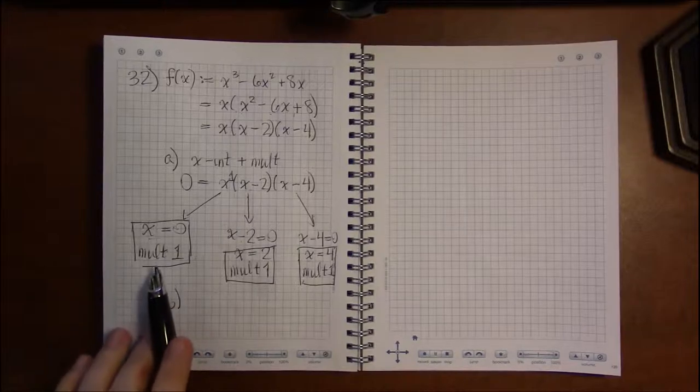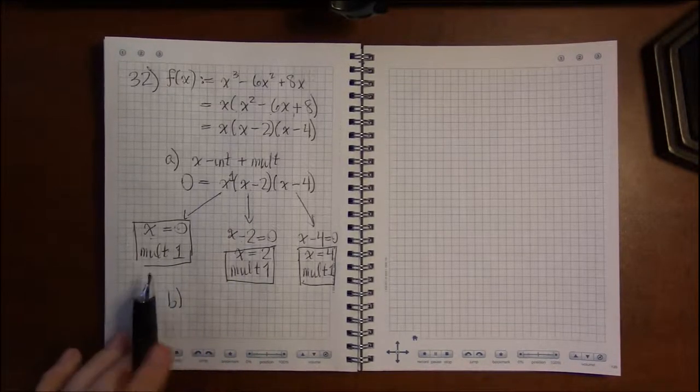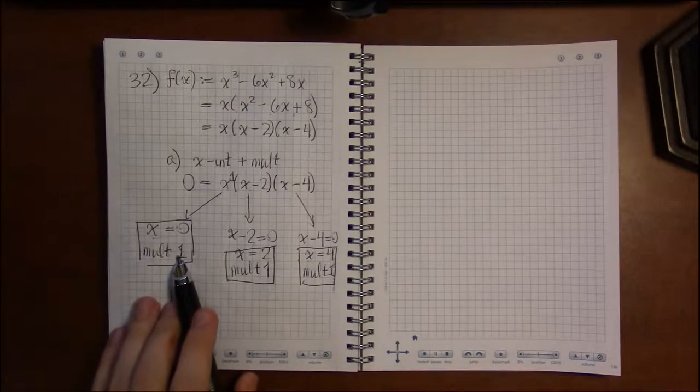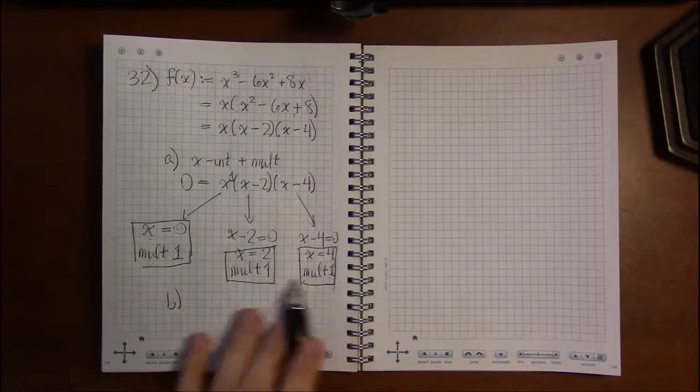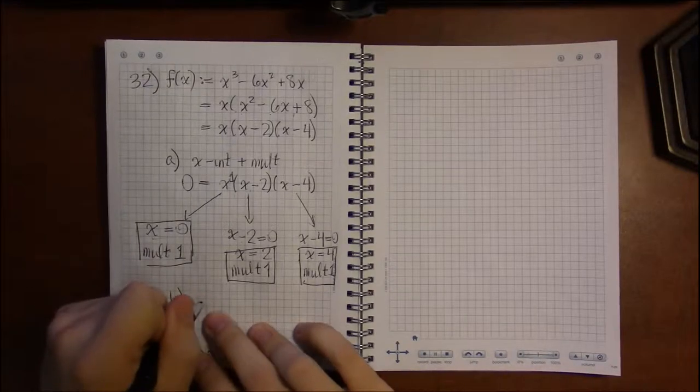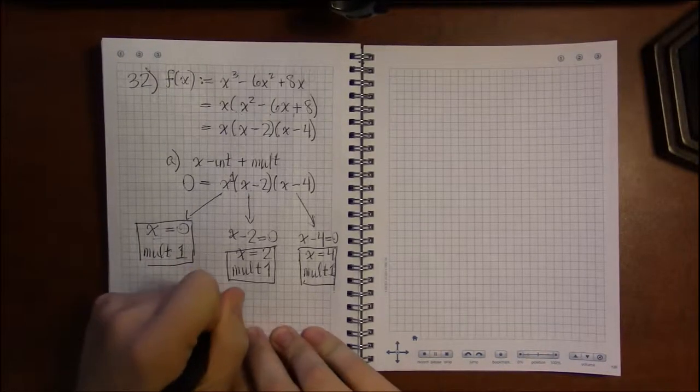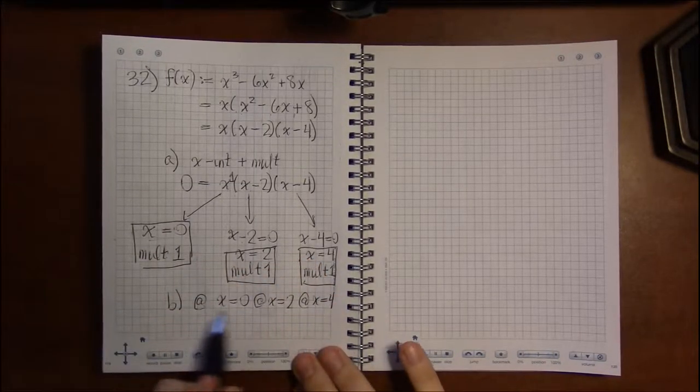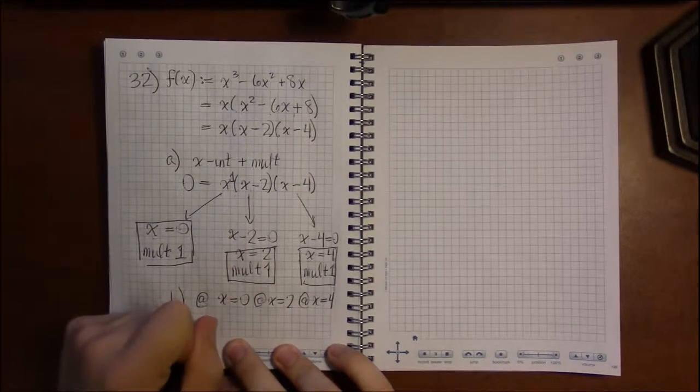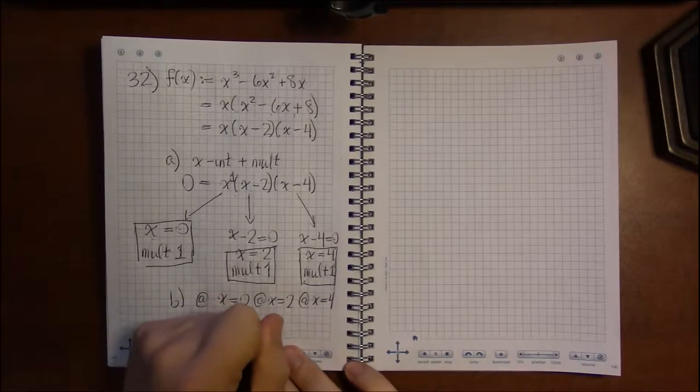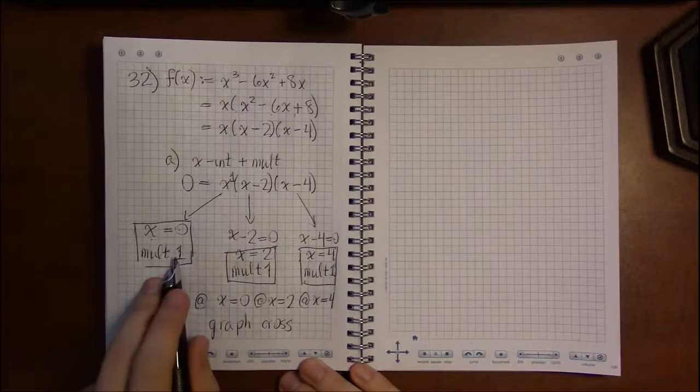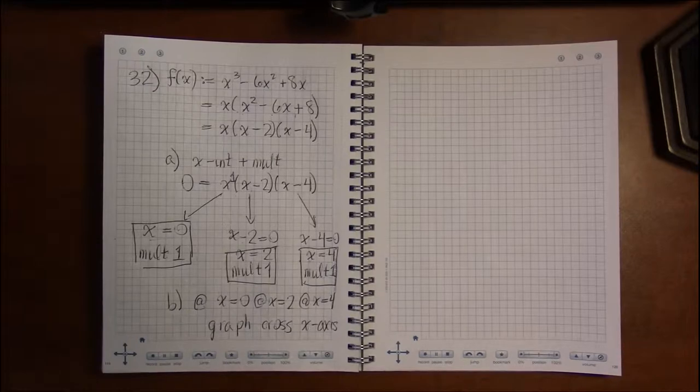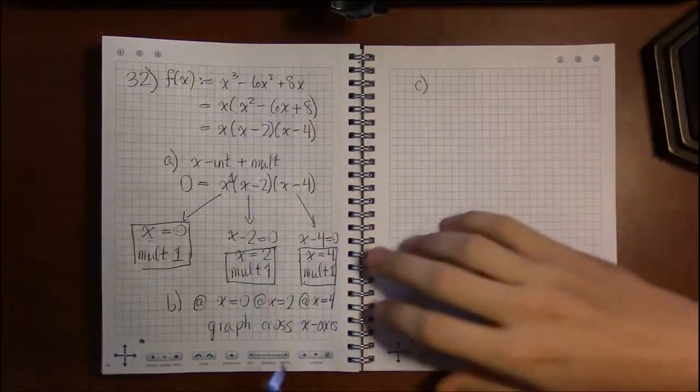For part B, whether these cross or touch, that deals with whether these are even or odd, but the multiplicities are even or odd. And the multiplicities are all the same, they're all 1, and therefore all these multiplicities are odd. So at each x-intercept, at x equals 0, at x equals 2, and at x equals 4, at each one of these, the graph of this polynomial is going to cross the x-axis because odd means crossing, even multiplicity means touching. And that's our answer for B.